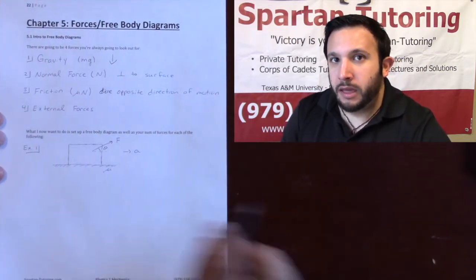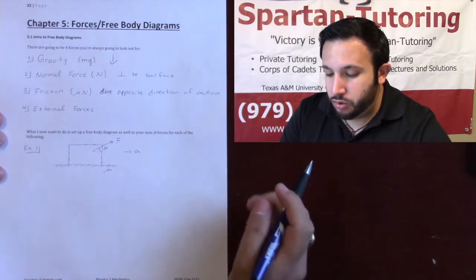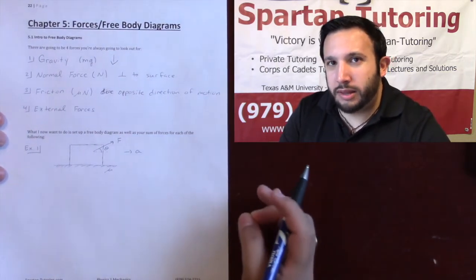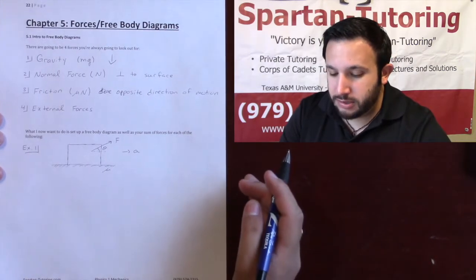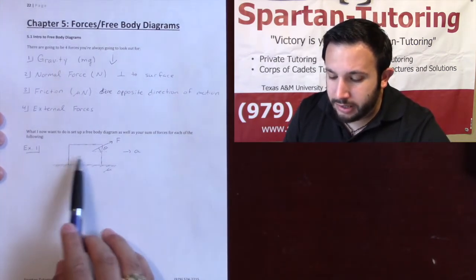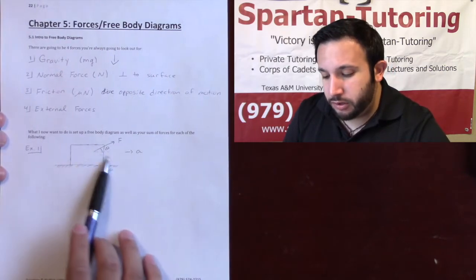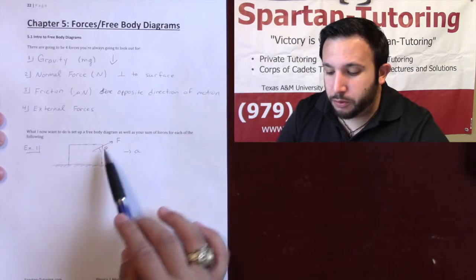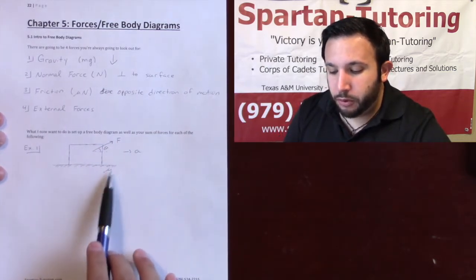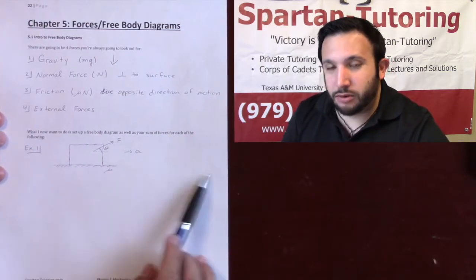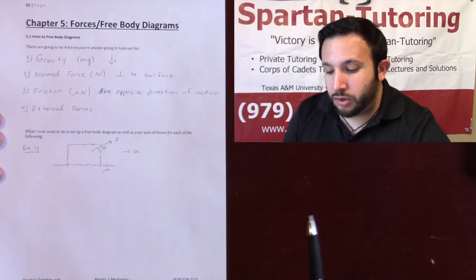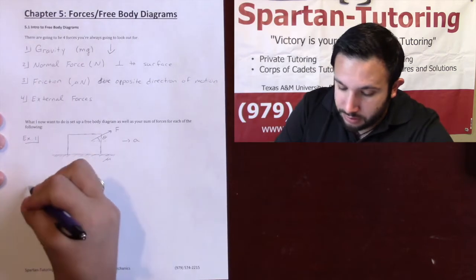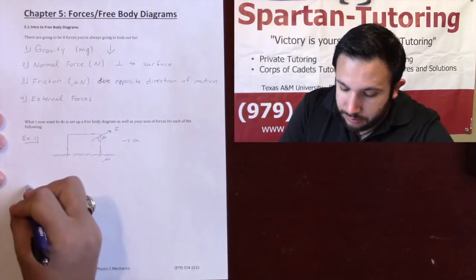We're going to do three examples and set up three free body diagrams as well as their sum of forces. For the first example, I have a block with a force being pulled at a certain angle. The floor has friction mu, and the block is accelerating to the right. Let's go ahead and set up the free body diagram.